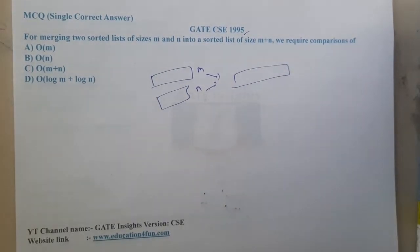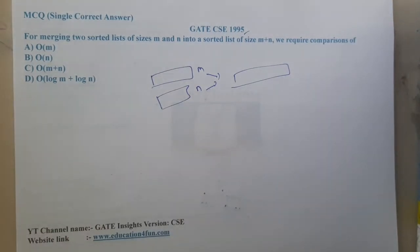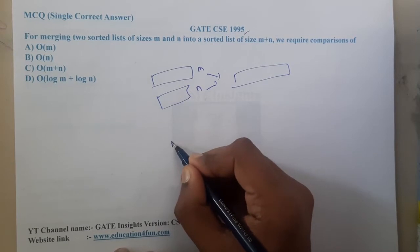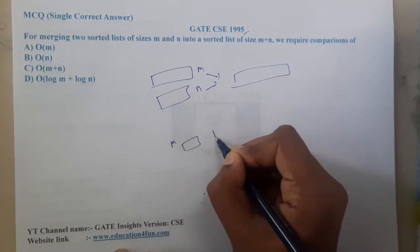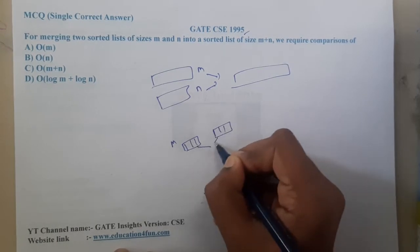This is a simple logical question. If you recall, we learned this concept of merging two lists in merge sort. In merge sort, you combine two sorted arrays. At each stage while merging, you do this. If you recall, what is the